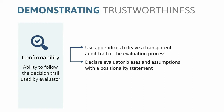Another strategy for demonstrating confirmability is to declare evaluator biases or assumptions through a positionality statement. A positionality statement asks the evaluator to critically reflect on their identities, their worldview, and their underlying assumptions in relation to the evaluation's social and political context. It locates the evaluator in relation to the project and the participants, shedding light on known and unknown lenses that might have influenced the evaluation. To learn more about writing a positionality statement, see a recent blog on the Evaluate website written on this topic.